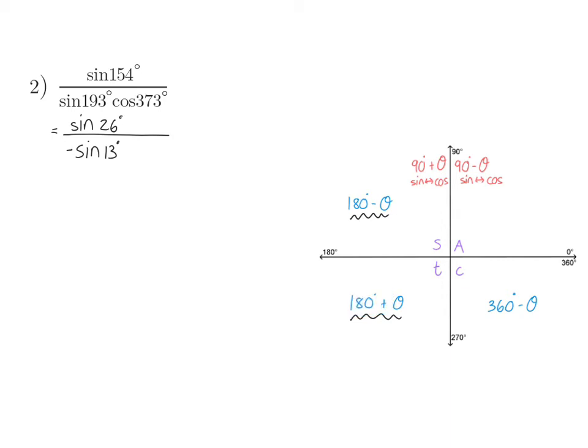And lastly, cos of 373. 373 is bigger than 360, so I'm going to start off subtracting 360, and then I will have cos of 13 degrees.